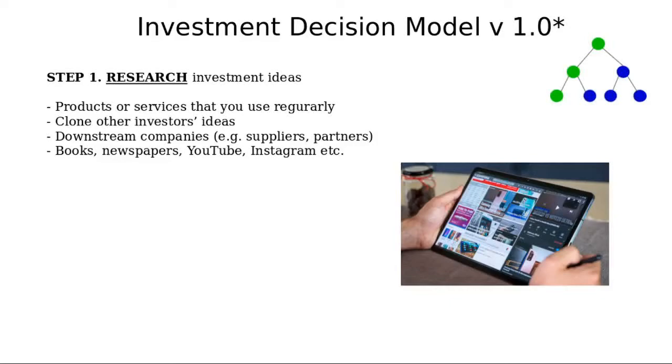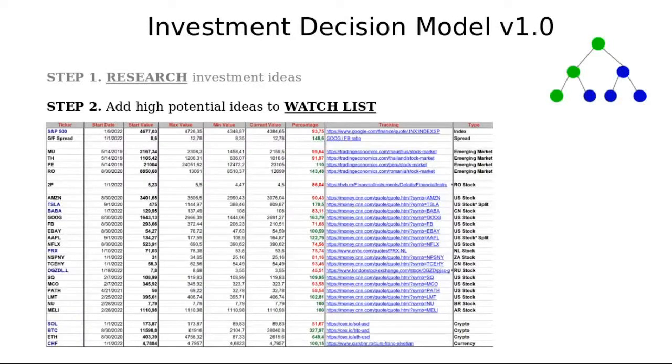Now, where to find investment ideas? Of course, the first one would be to check out the products or services that you use regularly and, of course, that you love. Another idea would be to clone other investors. A third one would be to find downstream companies, for example suppliers, partners. So if Apple has a great year in selling iPhones, probably the company that is providing the chips for the iPhones will also have a pretty good year. Also, of course, in books, newspapers, YouTube videos, Instagram, etc.